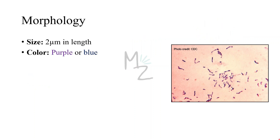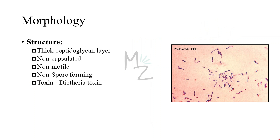Corynebacterium diphtheriae is about 2 micrometers in length, but this can vary. It is purple or blue in color because it is gram-positive and retains the dye due to its thick peptidoglycan layer in its cell wall. It is not capsulated, it is non-motile, it is not responsible for producing spores, and it releases the diphtheria toxin, which plays a major role in the pathogenesis of diphtheria.